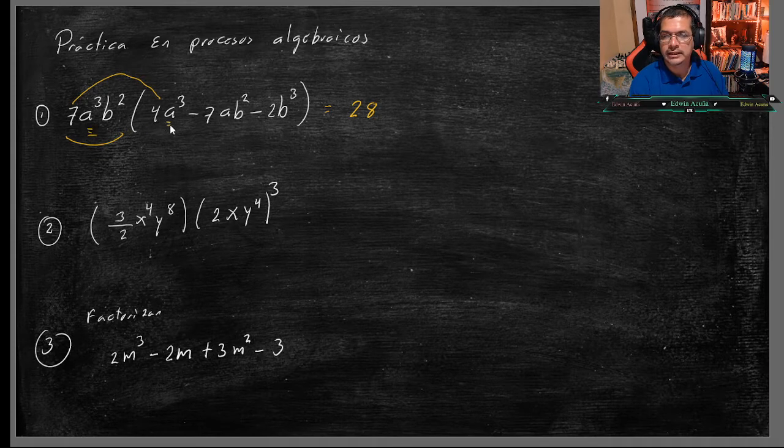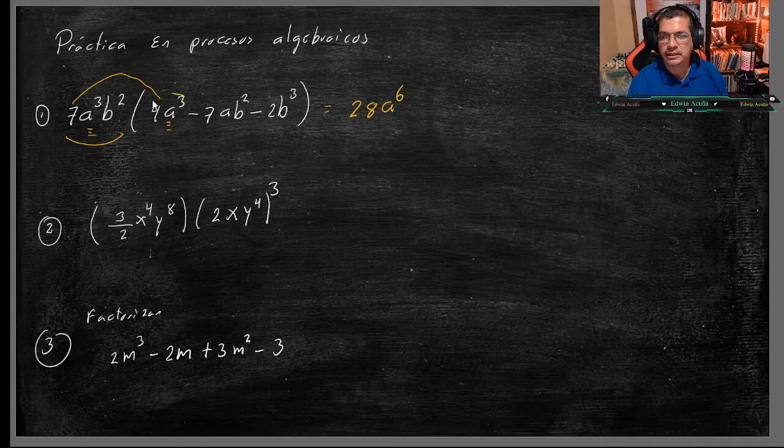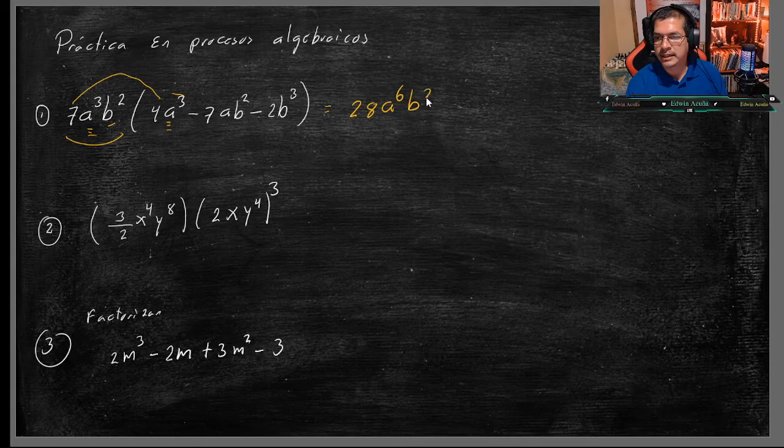A la 3 por A la 3, obviamente me quedaría A la 6, se suman los exponentes, o sea 3 más 3 es 6. Pero esta vez este no lo tiene, se baja, se le agrega el B2.